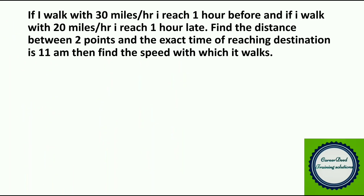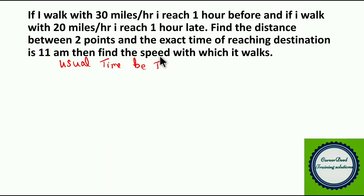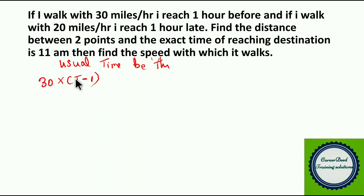Moving to question number 16. If I walk at 30 miles per hour, I reach 1 hour before. If I walk at 20 miles per hour, I reach 1 hour late. Find the distance between 2 points and my exact speed. Let the usual time be t hours. At 30 mph he arrives t minus 1 hours after leaving, so distance equals 30 into (t minus 1).